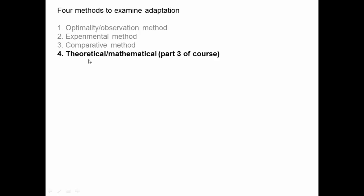We've looked at three methods. There is a fourth method, which is to do mathematics, generate results, and then see whether nature fits those results. We'll see examples of that in the third part of the course when we do population genetics. As we go through the rest of this section, we'll talk about studies used to convince us that things are going on the way we describe, explaining things more in terms of results and processes that we have evidence for. Keep in mind that we're doing all four of these things in the background as we examine each process in the remaining videos.